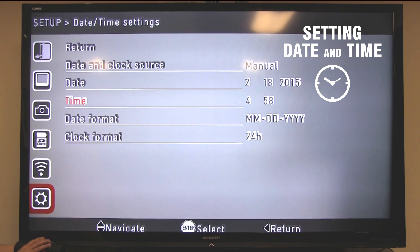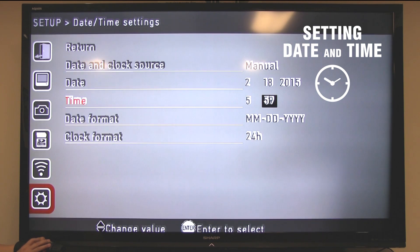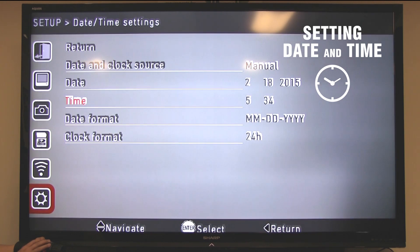We'll use the down arrow to go to the time. Press enter. We'll use the up arrow to select the hour. Press the right arrow to select the minutes. And then we'll use the down arrow to set the correct minute. Once we're done with that we press enter and we've set our date and time.